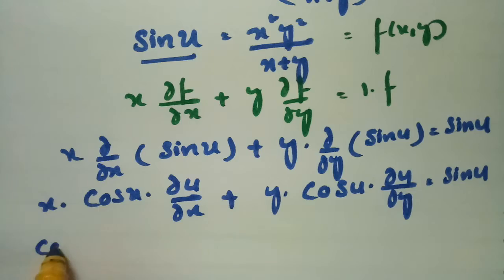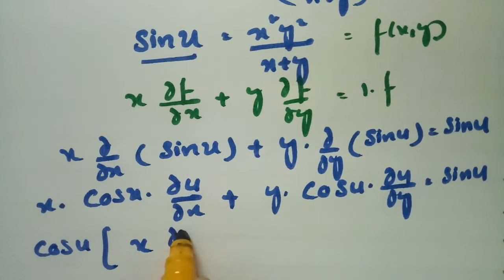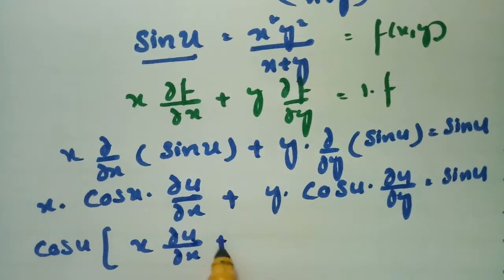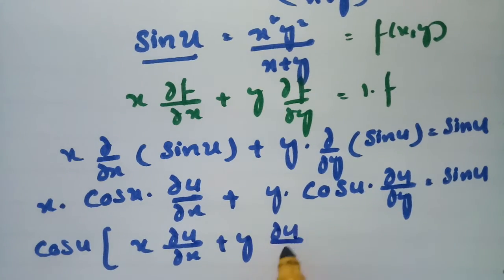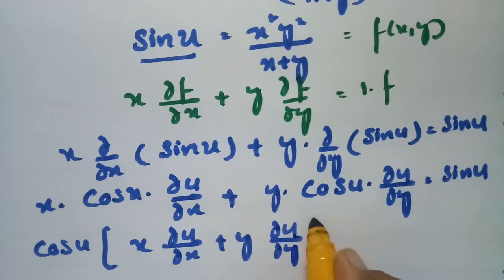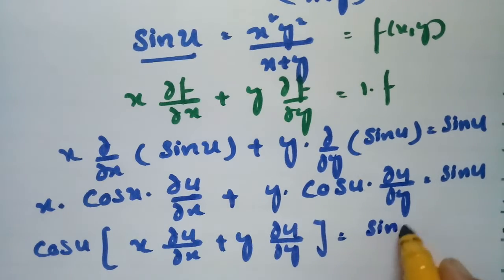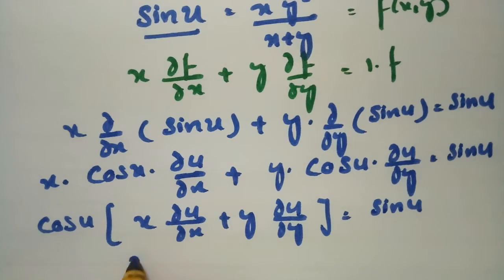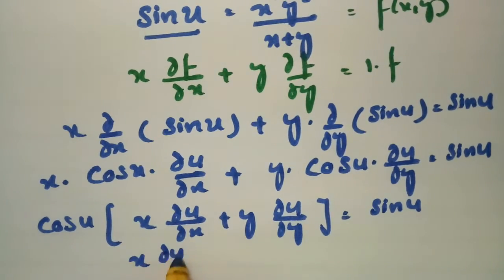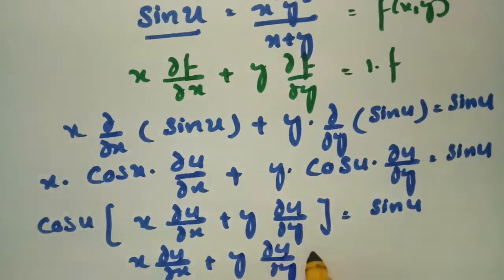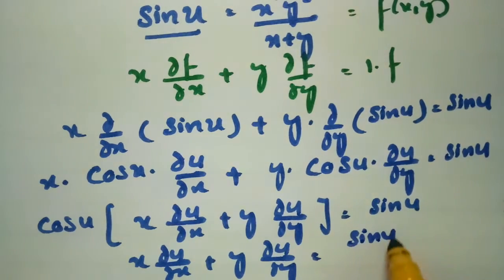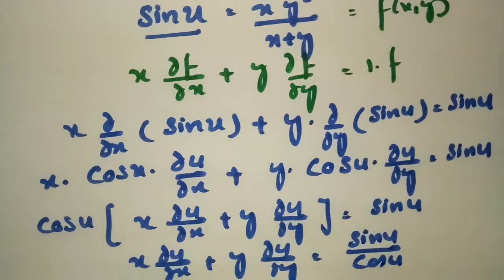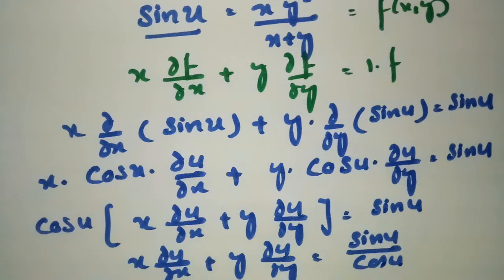Taking cos u common from the left side, we get cos u times (x·∂u/∂x + y·∂u/∂y) = sine u. Dividing both sides by cos u gives sine u over cos u, which is nothing but tan u.